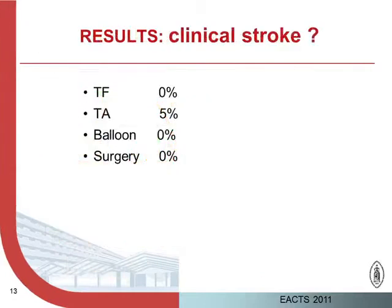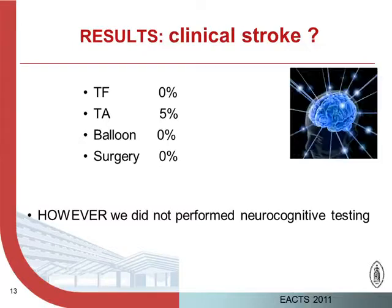Do these ischemic lesions have clinical stroke incidence? We have only one patient out of 77 patients studied who had a stroke. It was in the TAVI group — an 88-year-old man who had a previous cardiac operation, sleep apnea syndrome, and multiple peripheral vascular disease. However, the clinical incidence is based only on sensitive motor examination; we did not perform any neurocognitive testing on those patients.